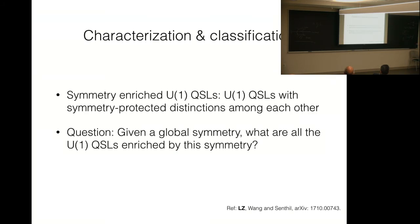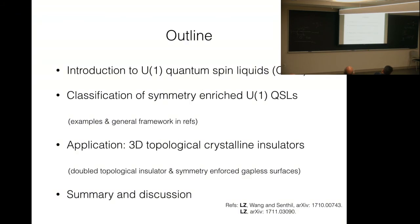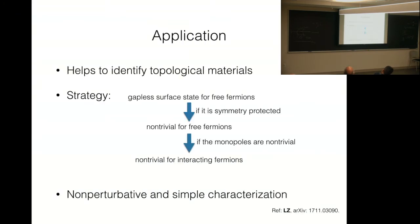So now I can introduce you the concept of symmetry-enriched quantum spin liquids. They are quantum spin liquids with a global symmetry, and they have symmetry-protective distinctions among each other. Then, the task to classify them is: given a global symmetry, what are all the possible quantum spin liquids enriched by the symmetry. Because of the time limit, the result can be found in the paper. Let me talk about some interesting applications.